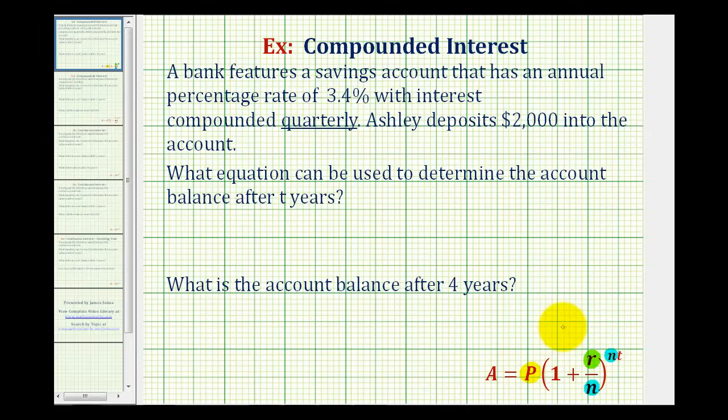If it was monthly, N would be 12. T is time in years, and A is the amount after time T. So for this situation,